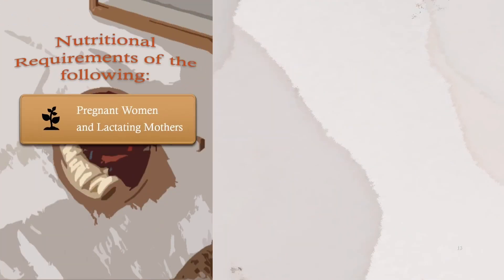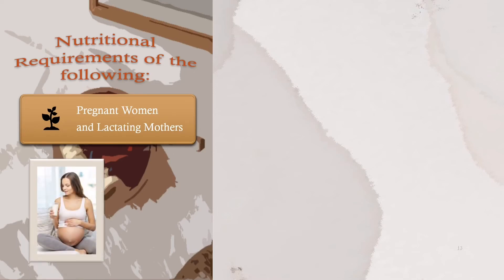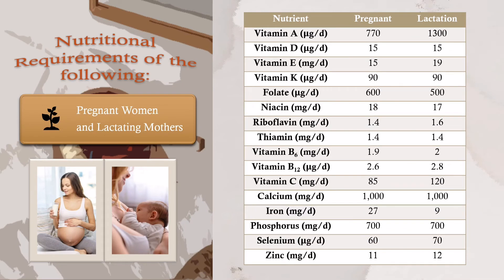Pregnant women and lactating mothers: The nutrients required are vitamin A, vitamin D, vitamin E, vitamin K, folate, niacin, riboflavin, thiamine, vitamin B6, vitamin B12, vitamin C, calcium, iron, phosphorus, selenium, and zinc. The side tables show the RDA for pregnant and lactating mothers.